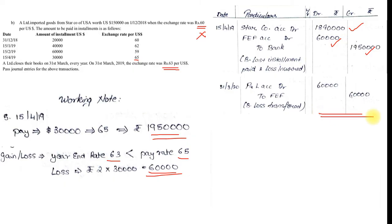The sum is very simple — you just have to remember those three journal entries and this working note. I hope everyone has understood how to solve the sum based on import purchase. With that, we will be ending this video. Thank you.